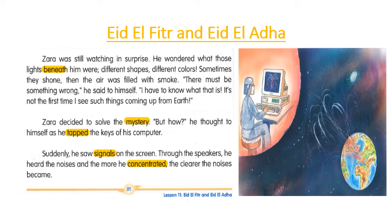Now, dear students, follow along as I read the text. Zara was still watching in surprise. He wondered what those lights beneath him were — different shapes, different colors, sometimes they shone. Then the air was filled with smoke. 'There must be something wrong,' he said to himself. 'I have to know what that is.'